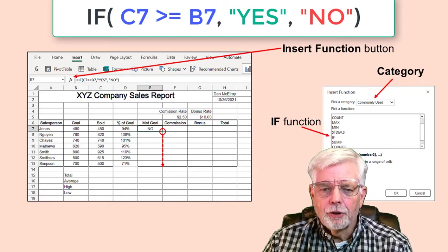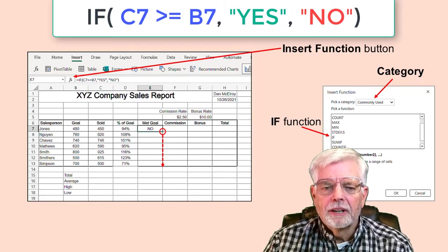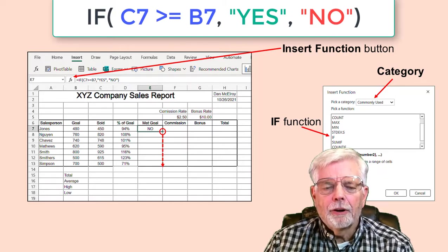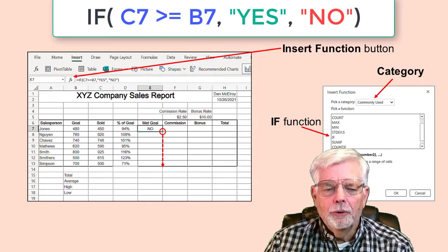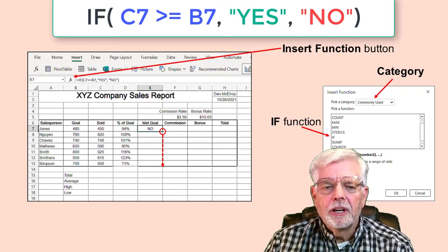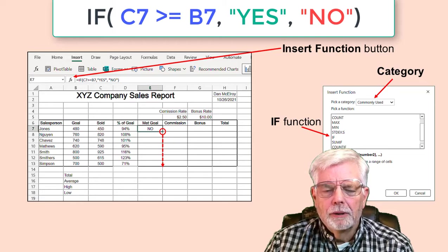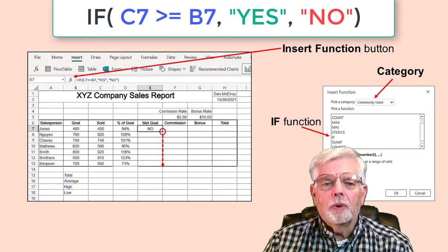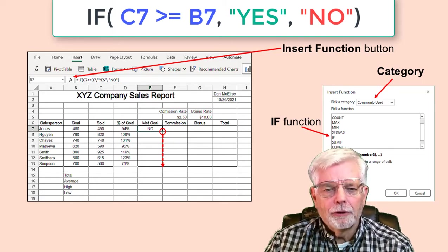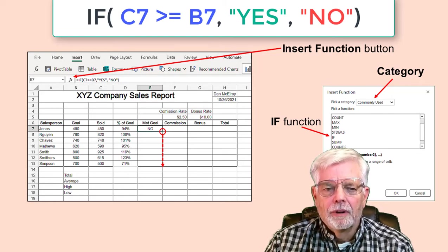You are ready to enter the logical test. Click cell C7, which has the amount sold for the first employee. Enter the characters greater than or equal to represent >= . Then click cell B7 for the first employee's goal. Press the comma character to advance to the next part of the IF statement. Type quote, yes, quote, and then a comma. Don't forget the quotation marks. And now for the third part of the IF: type quote, no, quote, and press the Enter key.